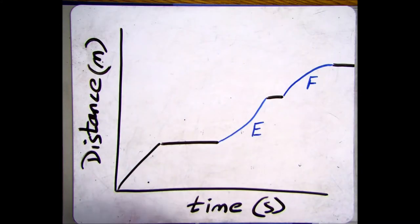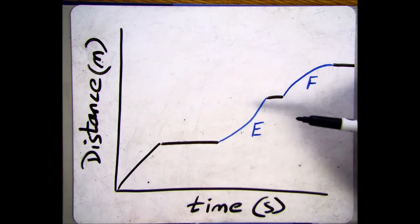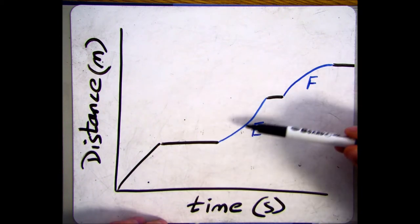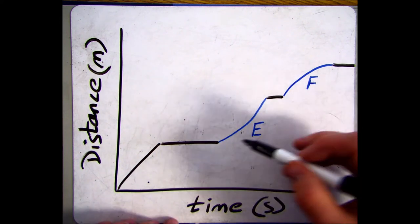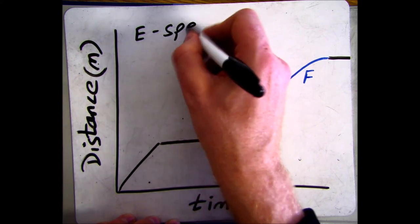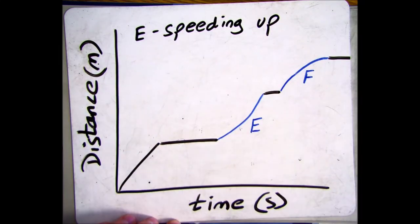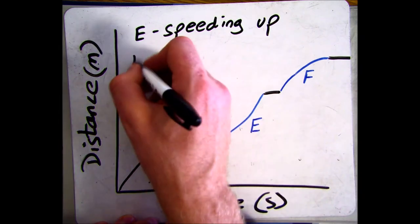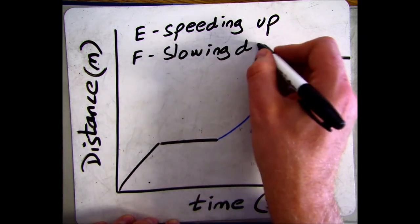Here we have a similar graph but with two curves added. A straight line shows a constant speed, while a curve shows a changing speed. At E, where the gradient is getting steeper, the object is speeding up. At F, where the curve is getting shallower, the object is slowing down.